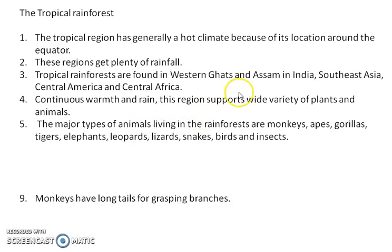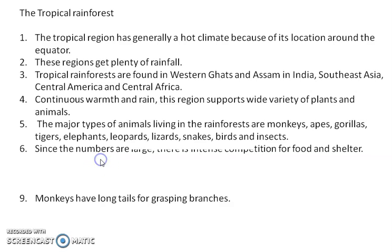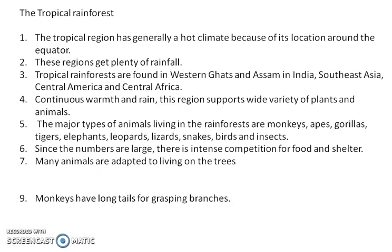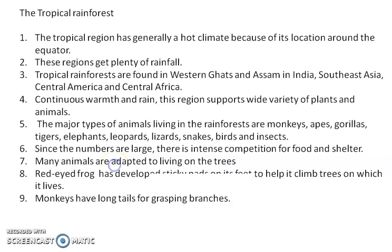The tropical rainforest has large animals like monkeys, gorillas, tigers, apes, elephants, leopards, lizards, snakes, birds, and insects. Because there are such a large number of animals and birds, there is competition for food as well as shelter. So these animals are adapted to live either on trees or on the ground.